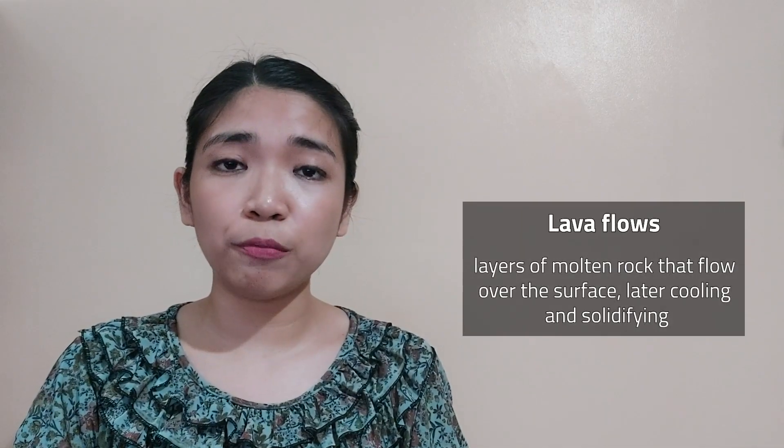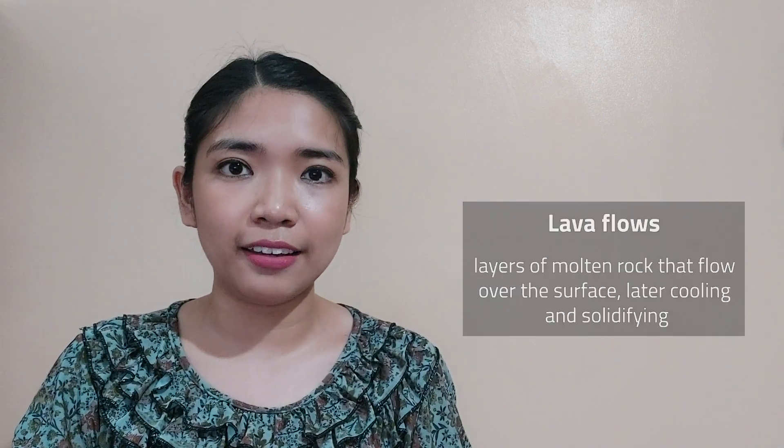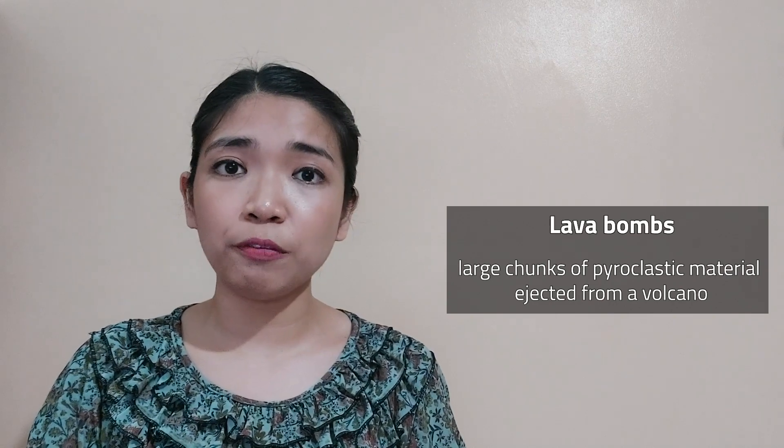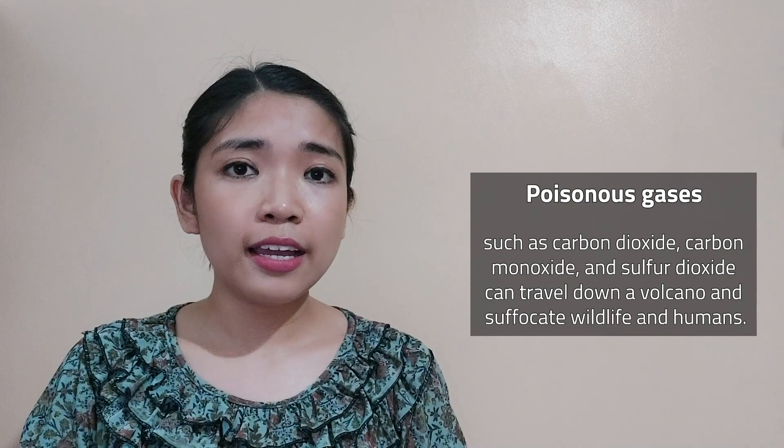Lahar flows occur when volcanic ash and fragments of rocks get swept by currents from rivers or by heavy rain. This is one of the factors why the Mount Pinatubo eruption in 1991 was so destructive. Lava flows are layers of molten rock that flow over the surface, later cooling and solidifying. Lava bombs are large chunks of pyroclastic materials ejected from a volcano. Larger pyroclastic materials are called blocks.